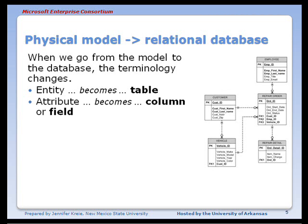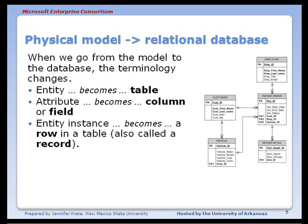An attribute becomes a column or a field. An entity instance, that one occurrence of an entity, becomes a row in a table, or also you can say it's a record in the table.